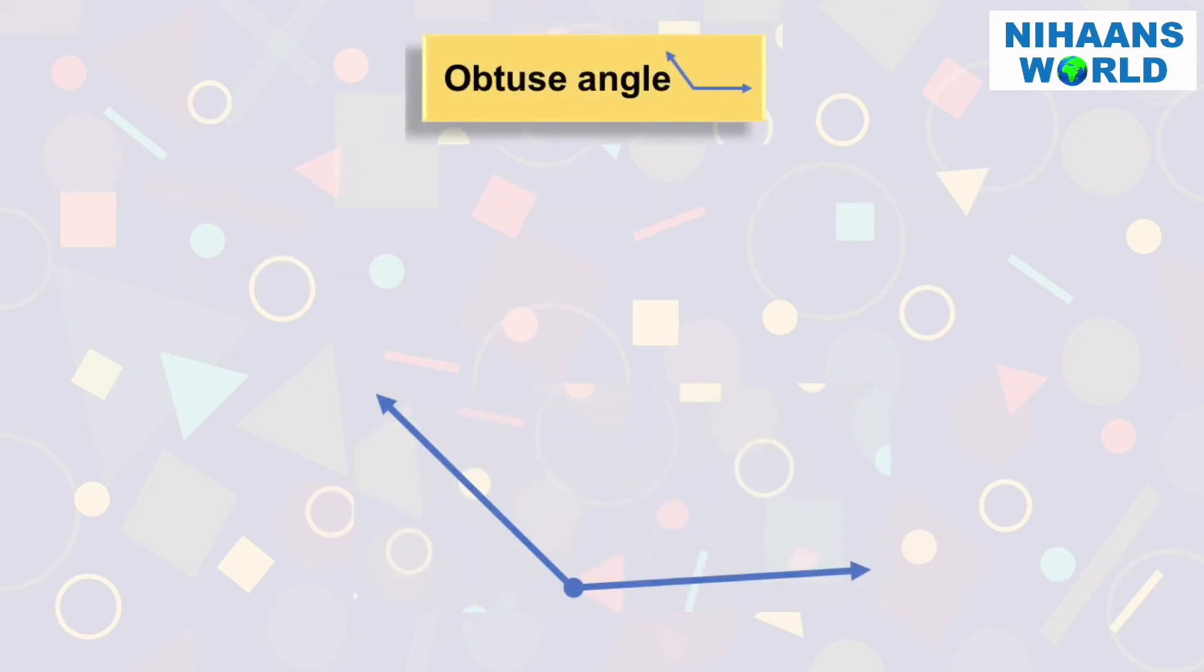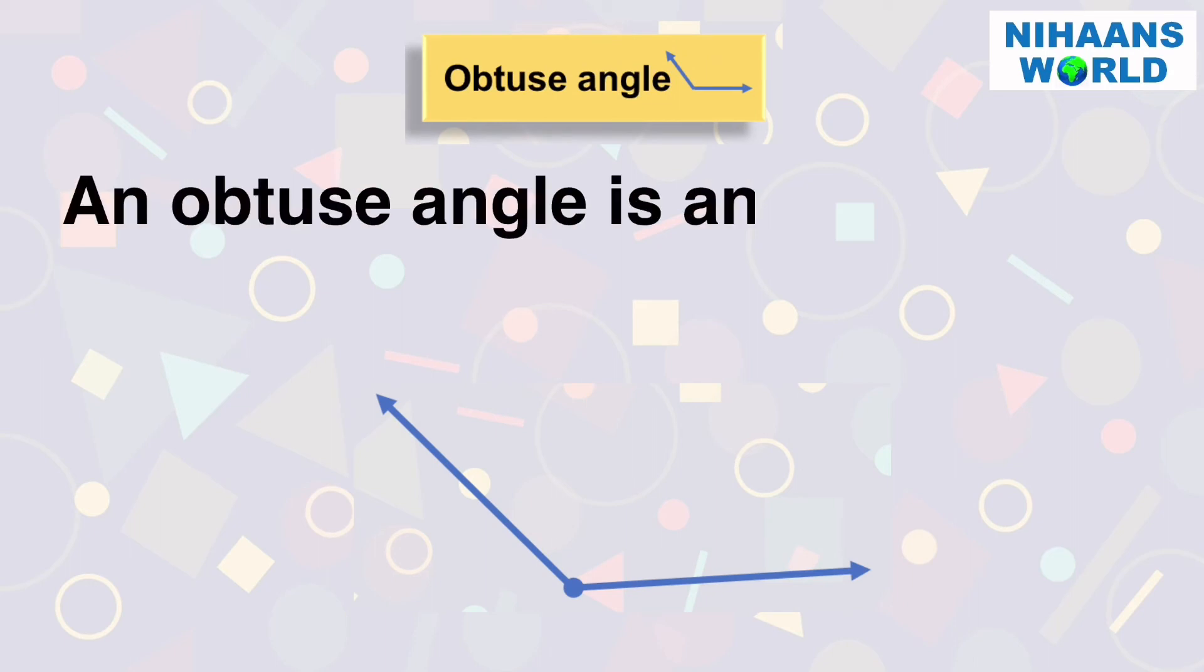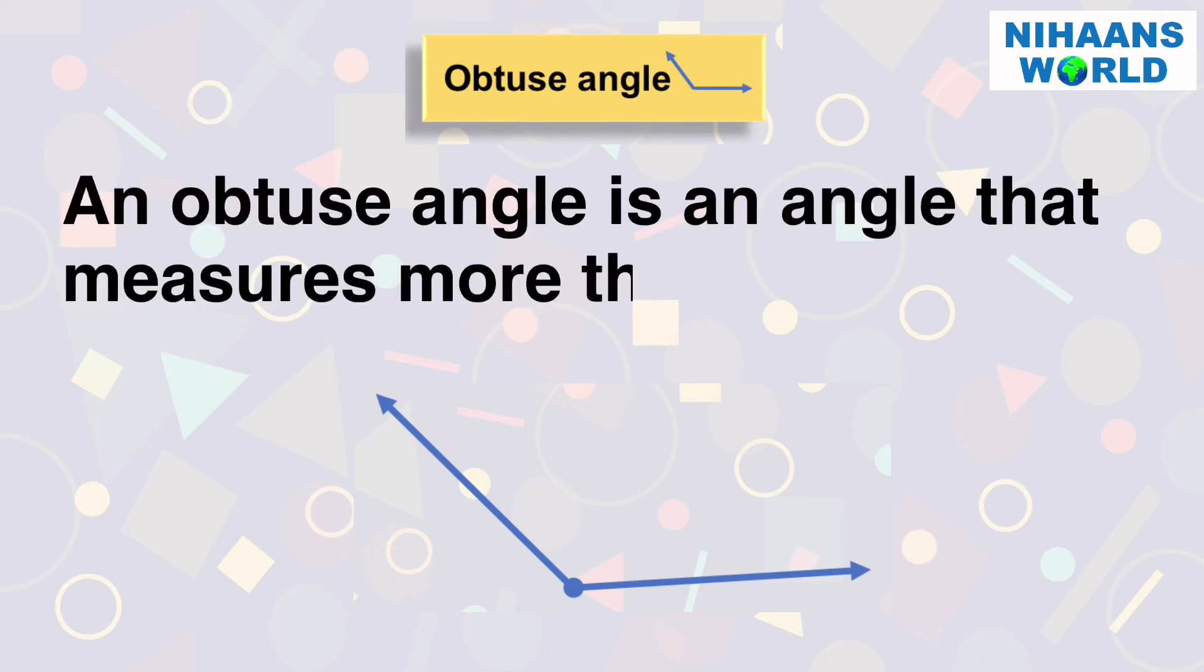What is an obtuse angle? An obtuse angle is an angle that measures more than 90 degrees.